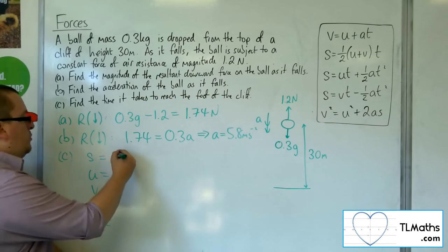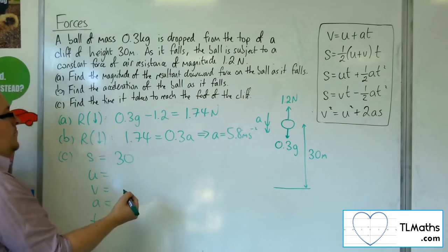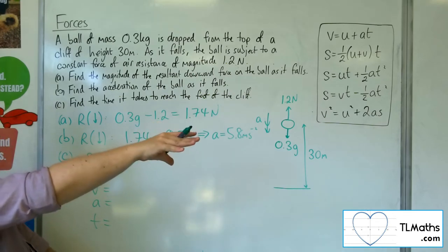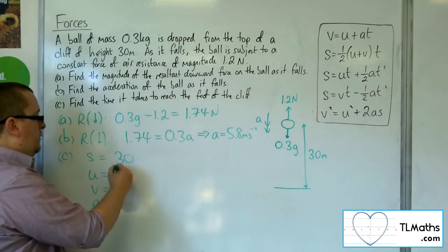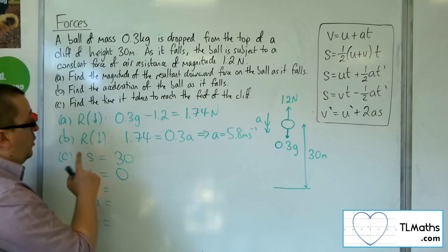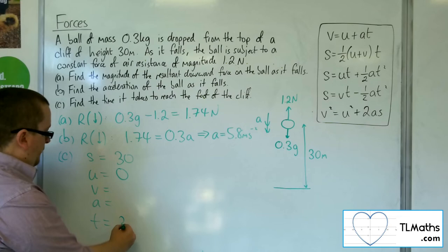So we want it to travel 30 meters. Now the initial velocity, it's just dropped from the top of the cliff, so that will be 0. I don't know the velocity and I'm not asked to find it. I want to find the time,